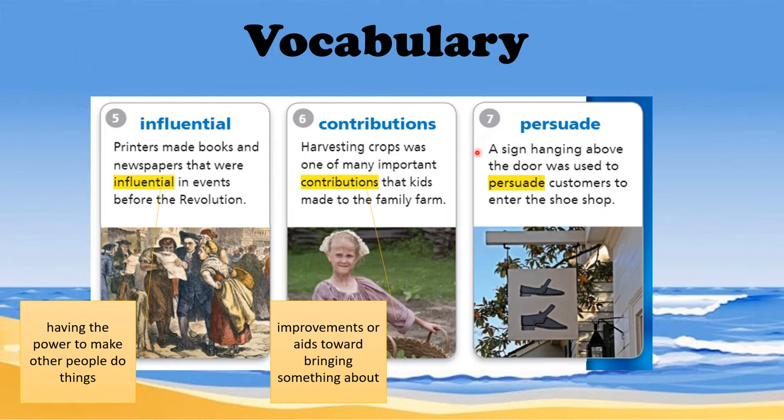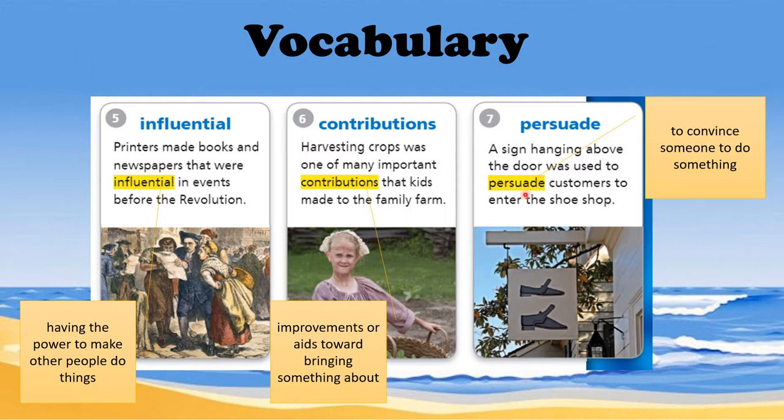Number seven is persuade. A sign hanging above the door was used to persuade customers to enter the shoe shop. This is similar to visiting a mall, where very colorful signs are convincing you to visit and shop. So the meaning of persuade — as in persuasive writing — is to convince someone to do something.